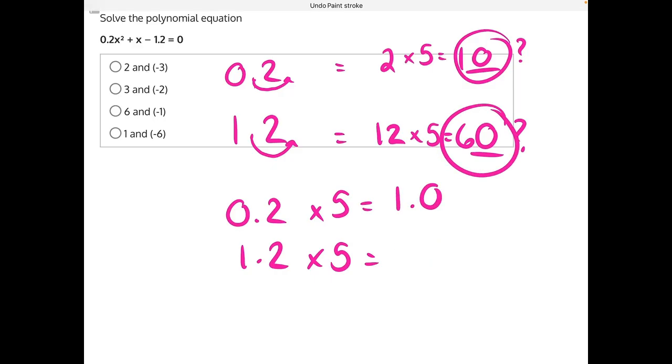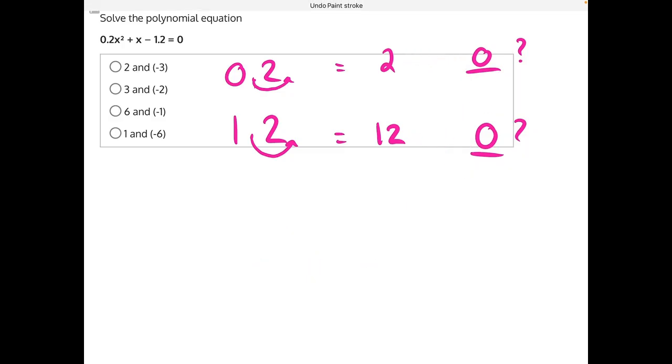So now we can rewrite our equation and remember to do the multiplication by 5 to every single term inside of this equation.